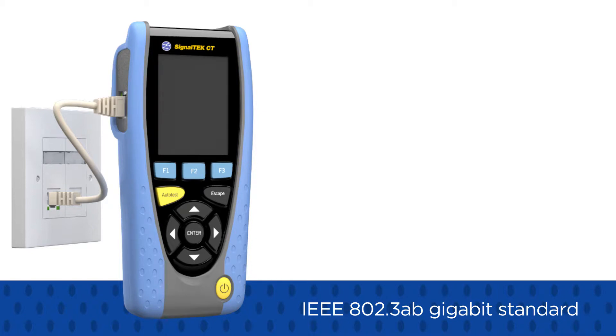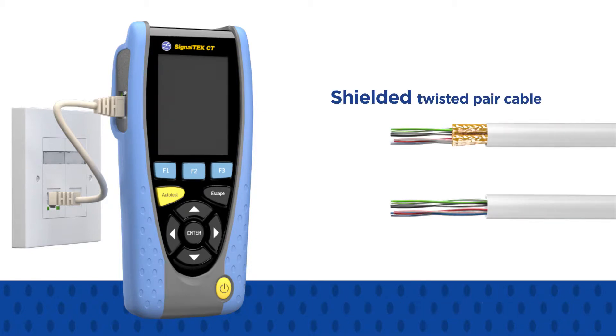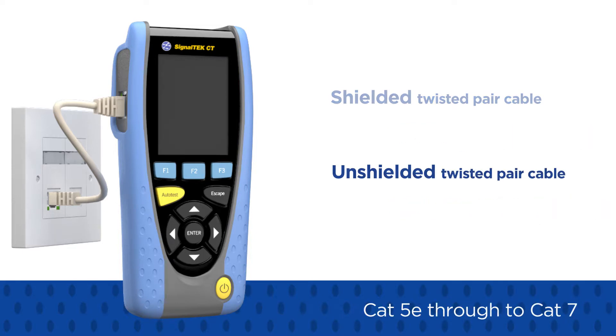Tests comply with the IEEE 802.3ab Gigabit standard, and can be completed on both shielded and unshielded twisted pair cable, including CAT5e through to CAT7.